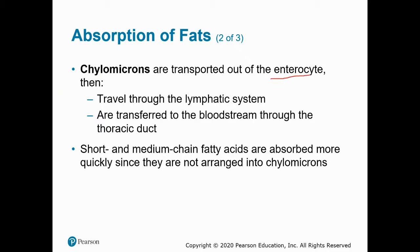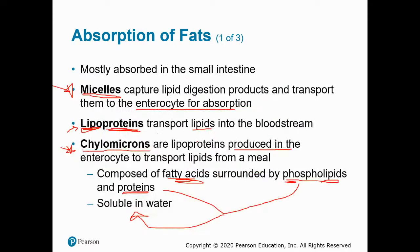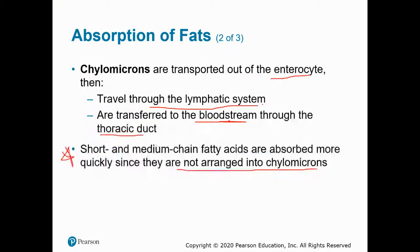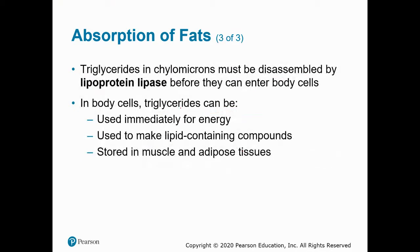Chylomicrons are packaged in the enterocyte, leave the enterocyte, enter the lymphatic system, and transfer into the circulatory system at the thoracic duct. Short and medium chain fatty acids can be absorbed directly into the blood — they're small enough to travel on their own and don't go into chylomicrons. A lipoprotein could carry a short or medium chain fatty acid through the blood. We also see an enzyme called lipoprotein lipase, which breaks apart the chylomicron, allowing the lipid components inside to enter into the body cells.